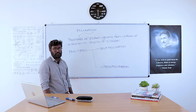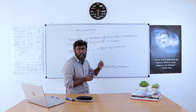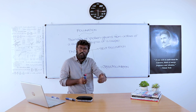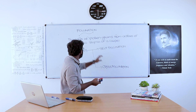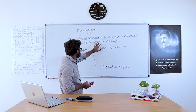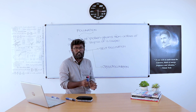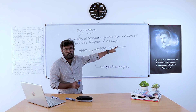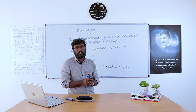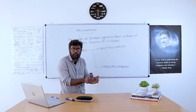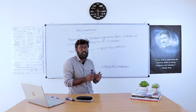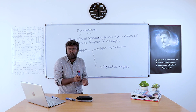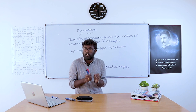Now moving to pollination. What is meant by pollination? It is the transfer of pollen grains. More accurately, it is the transfer of pollen grains from the anther of a stamen to the stigma of a carpel. That means the transfer of pollen grains from stamen to carpel is called pollination. Pollination is of two types: self-pollination and cross-pollination.